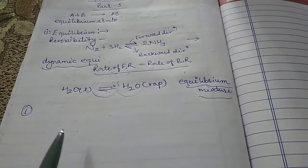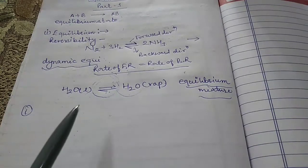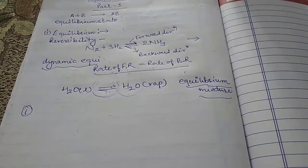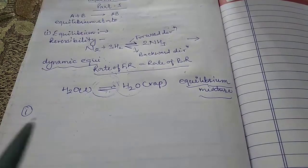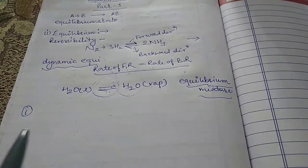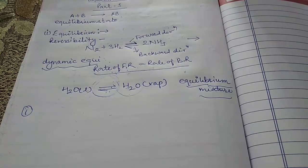The third possibility is reactions in which the concentration of the reactants and products are comparable when the system is at equilibrium. The extent of the reaction at equilibrium varies with experimental conditions such as concentration of the reactant or temperature.